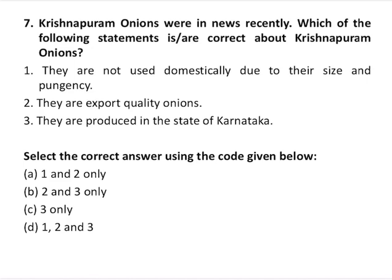Question number seven is about Krishnapuram onions, which were recently in the news. The first statement says they are not used domestically due to their size and pungency — correct. The second says they are export-quality onions — also correct. The third says they are produced in Karnataka — wrong, because they are produced in Andhra Pradesh. So statements one and two are correct, making option A the correct answer.